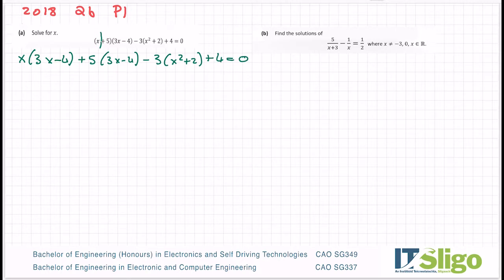Let's multiply it out. 3x by x is 3x². x by -4 is -4x. Plus 5, 3s are 15x. Plus 5 by -4 is -20. Minus 3 by x² is -3x². Minus 3 by 2 is -6 plus 4 is equal to 0. So I'm done multiplying by the -3 once that bracket closes, so that's why just plus 4 comes down to be plus 4.